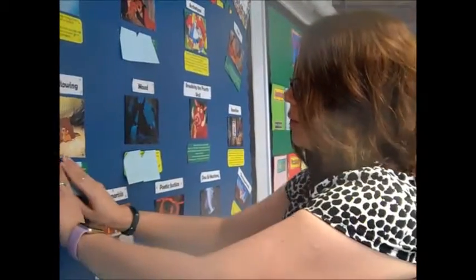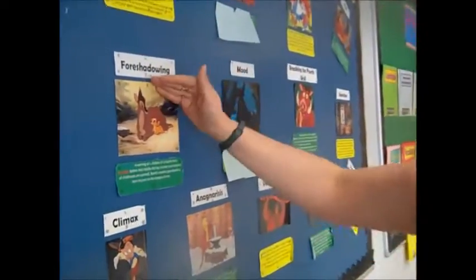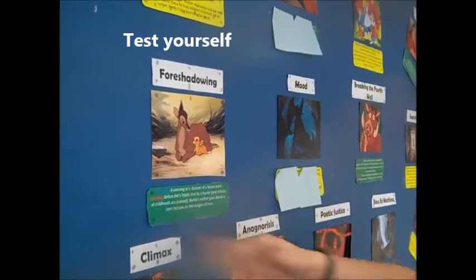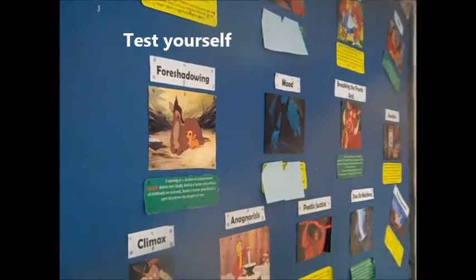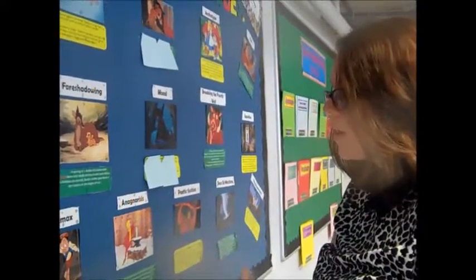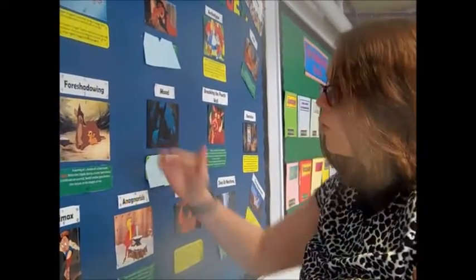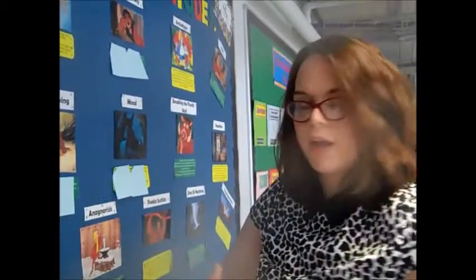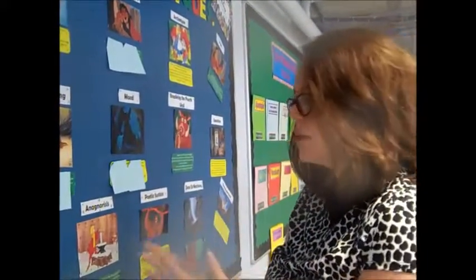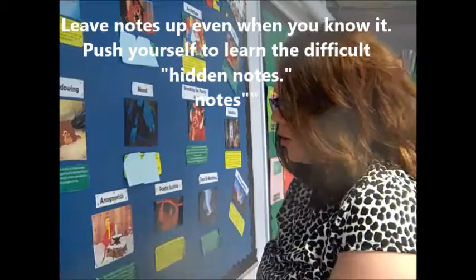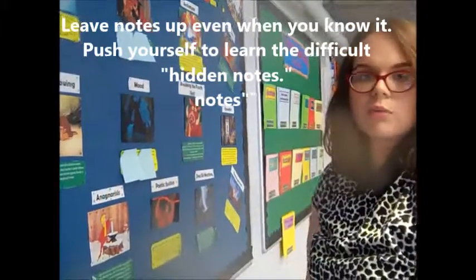So once I could say the definition of foreshadowing, I would check. If I was comfortable that my definition matched the notes I had written, I'd remove the post-it notes permanently because I knew I was secure on that. If I got it wrong or didn't get all the key points, I would cover it back up, go away, come back again in five or ten minutes, try and remember the definition again, check, and if I was right, they could permanently come off and then I'd move on to the next one.